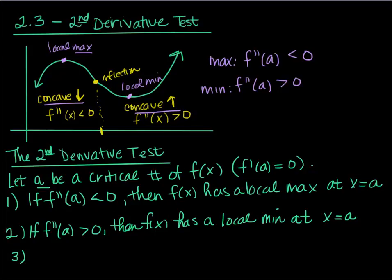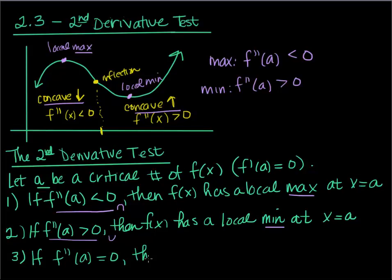So here's what the second derivative test tells us again: if we are less than zero, that means I'm concave down, so I have a max. If I'm greater than zero, that tells me my function is concave up at that point, and that means I have a minimum. What's another option? What if f double prime of a is equal to zero? If f double prime is equal to zero, the test is inconclusive. So what we would do in that case is go back to the first derivative test.